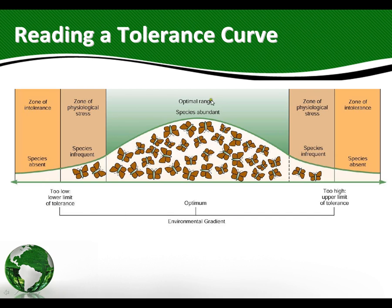The tolerance curve looks like this for every species — what changes is the optimum point. So looking at our butterflies, we said this was about 75 degrees. But if we changed these butterflies to penguins, the optimal temperature would not be 75 degrees — it would probably be closer to freezing. But the curve would still look the same.